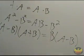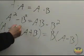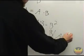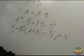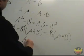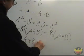The next step is we're going to cancel A minus B out on both sides. This leaves us with A plus B is equal to B.